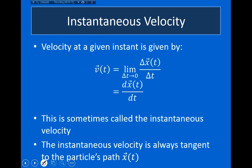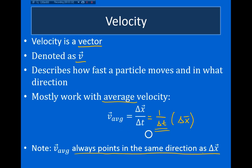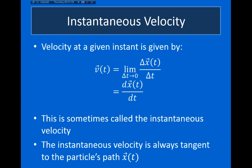Now I want to talk briefly about instantaneous velocity. Imagine you drive from home to school — you travel about five miles and it takes you ten minutes. From that we could calculate your average velocity. But obviously as you drive, your instantaneous velocity — the velocity at any particular instant — is constantly changing. When you push on the gas pedal, you accelerate and your velocity increases. When you push the brake, you slow down. When you turn, the direction of your velocity changes.